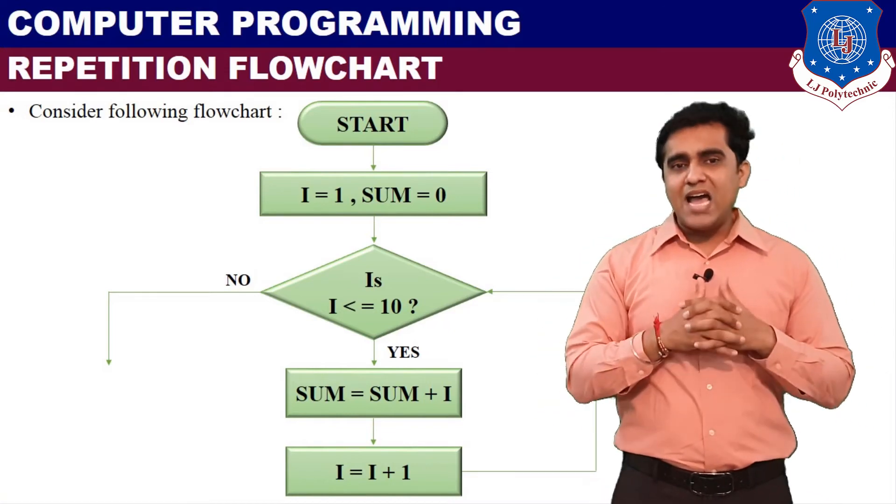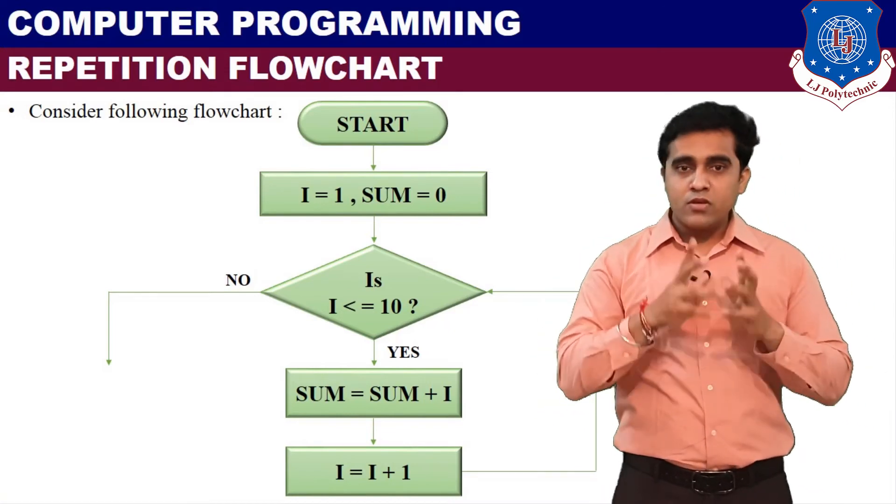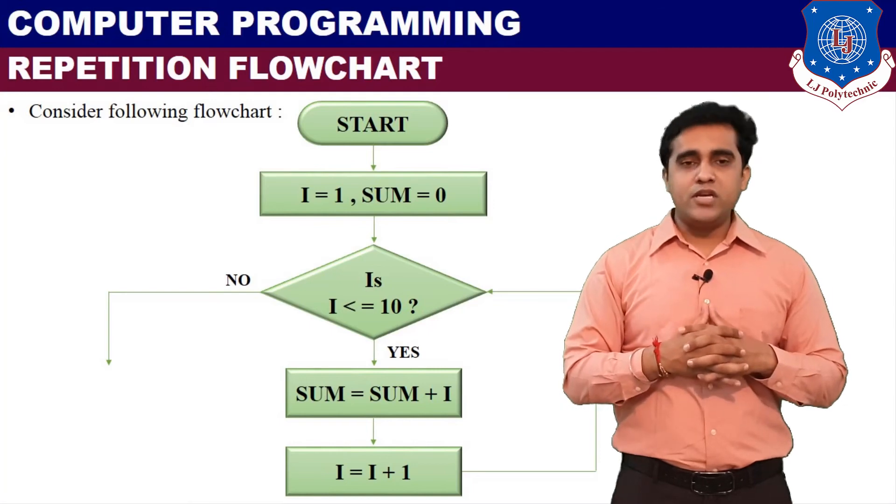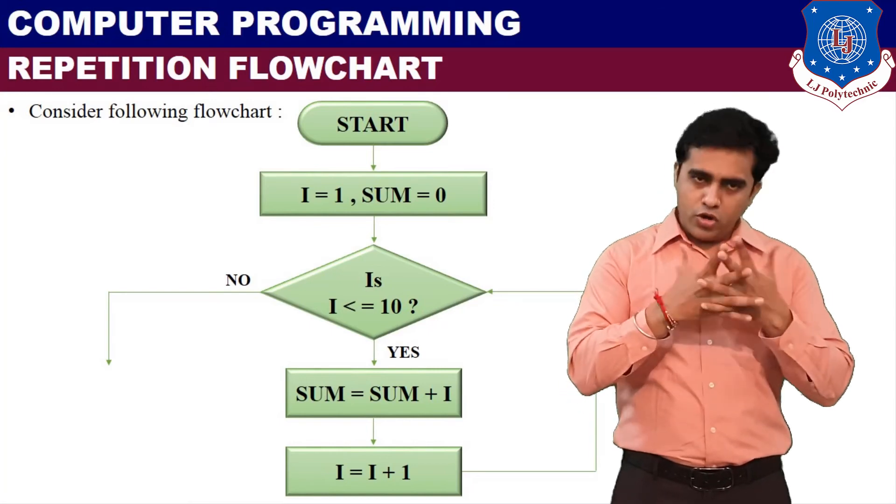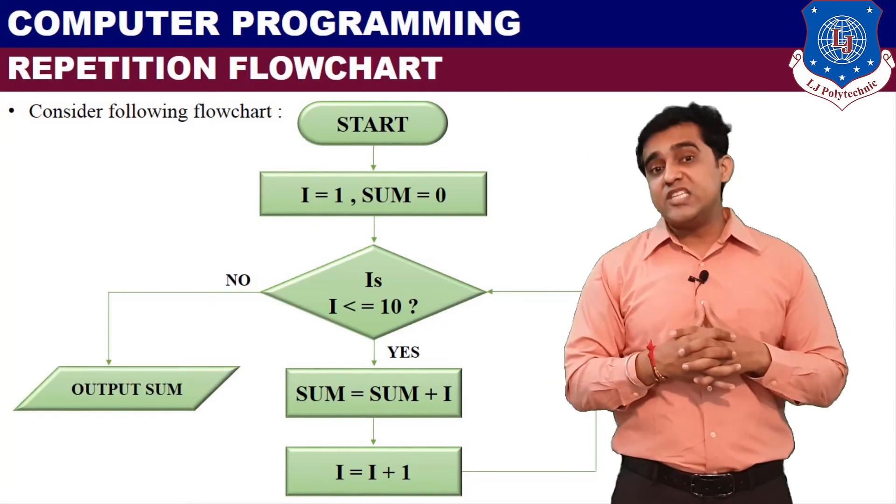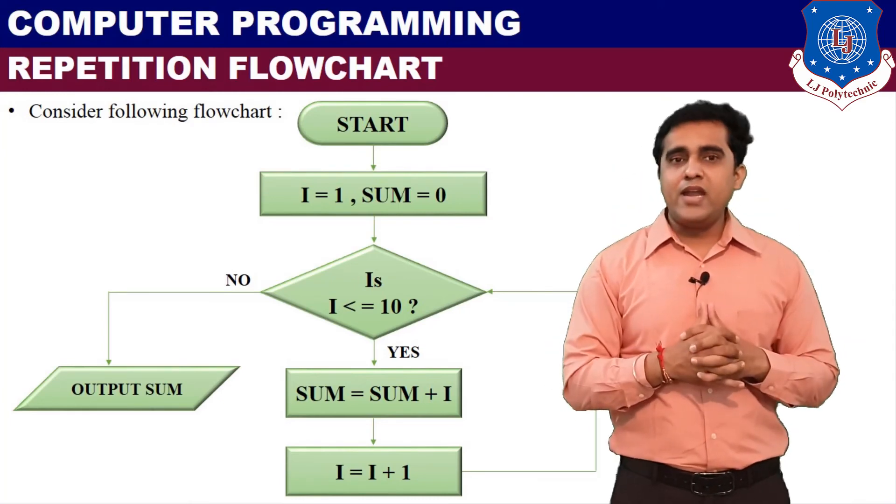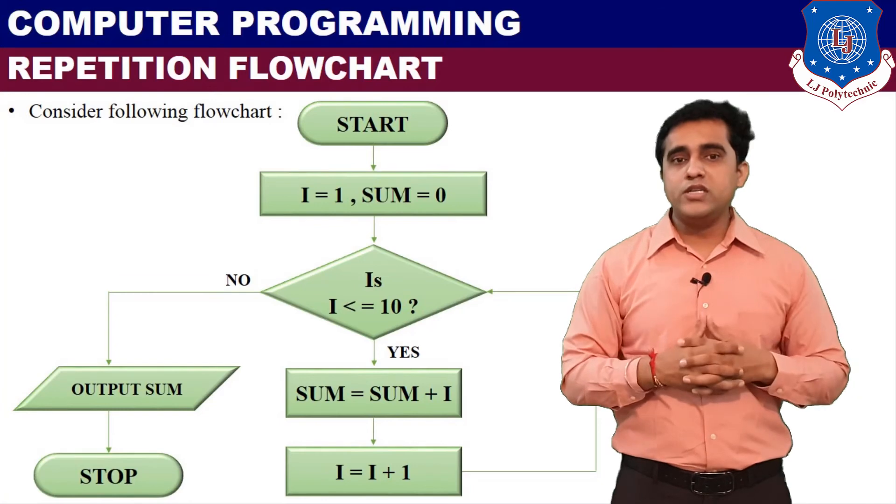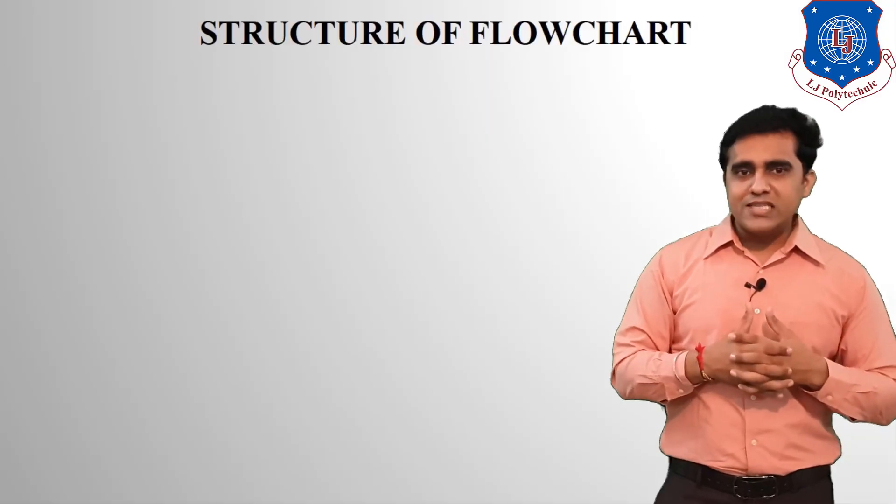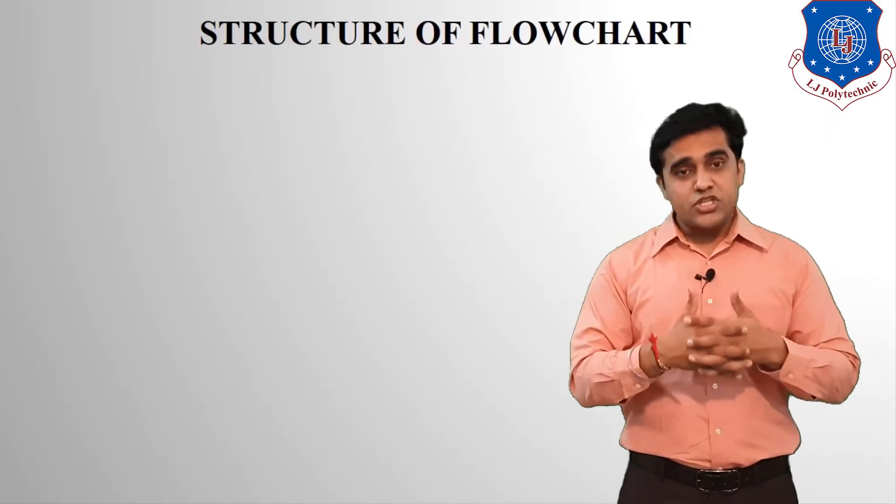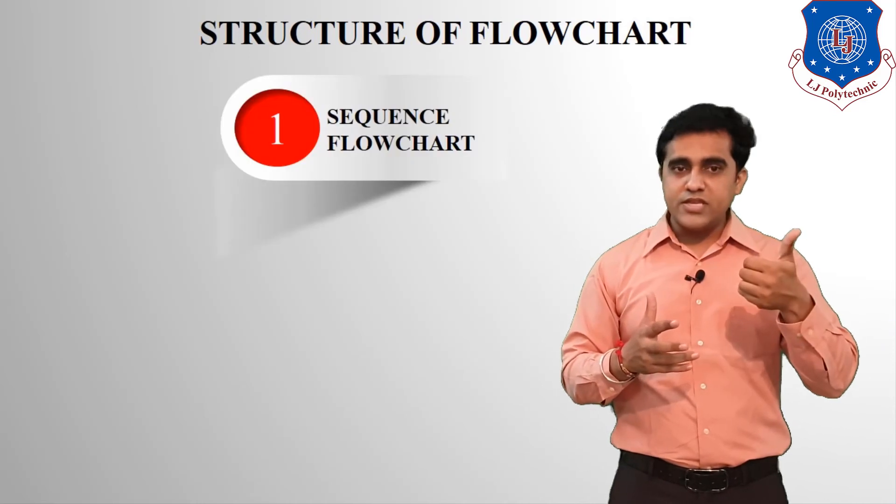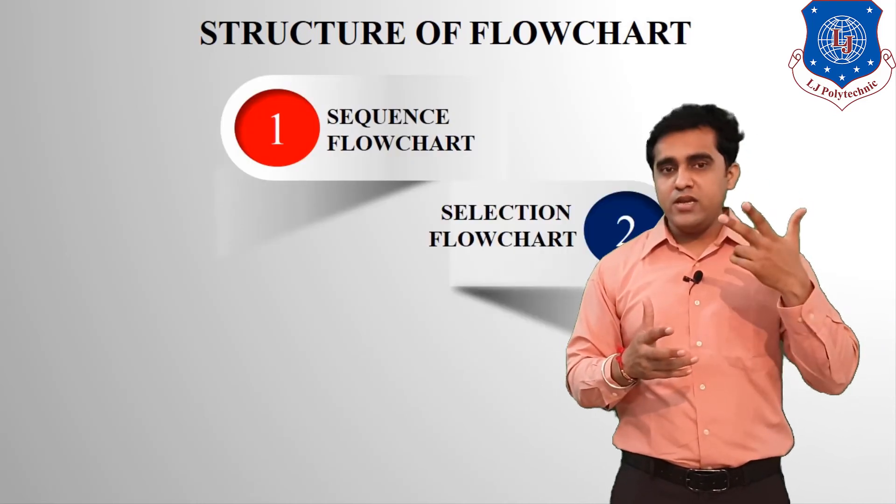So it will continue till I will become more than 10. When I will become 11, the condition is going to be false or no. Then we will display the sum, the total sum of 1 to 10, and at the end we will go for a stop. So this is the structure of flowchart: sequence, selection, and repetition.